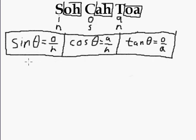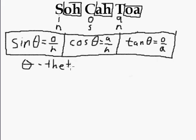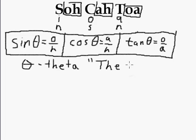Now, what's this theta thing? Well, theta is called the angle. So whenever I say sine of the angle or cos of the angle, it means theta — the angle. If I give you 20 degrees, then you use 20 degrees. You have to remember that it means the angle.